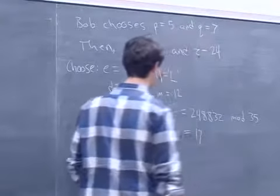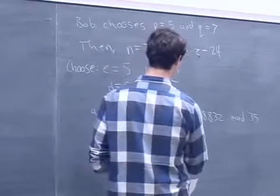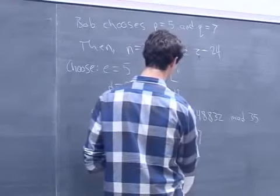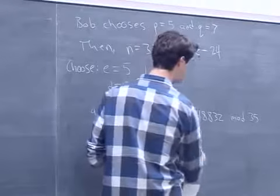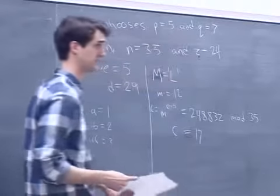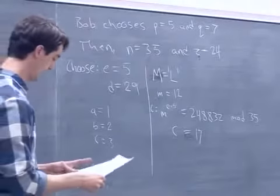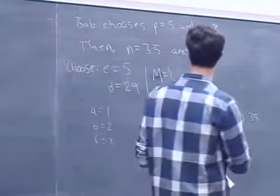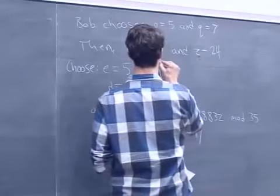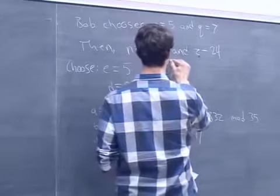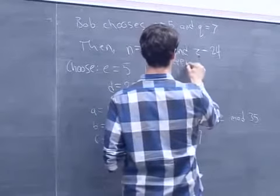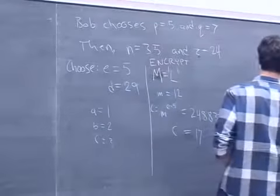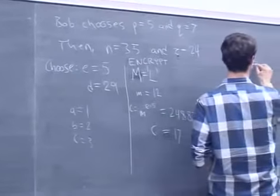This gives us ciphertext = 17. That was the encryption step. Now on the other side, we need to decrypt the message.